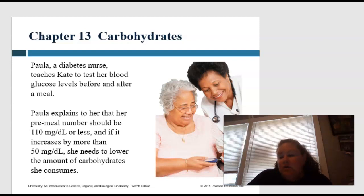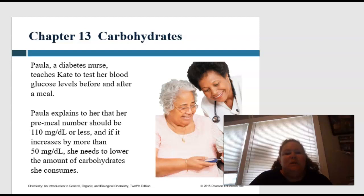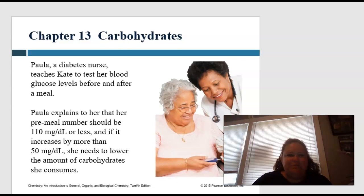For chapter 13 we are going to start with carbohydrates. Let's apply it: Paula, who is a diabetes nurse, teaches Kate to test her blood glucose levels before and after a meal. Paula explains that her pre-meal number should be 110 milligrams per deciliter or less, and if it increases by more than 50 milligrams per deciliter, she needs to lower the amount of carbs she consumes.